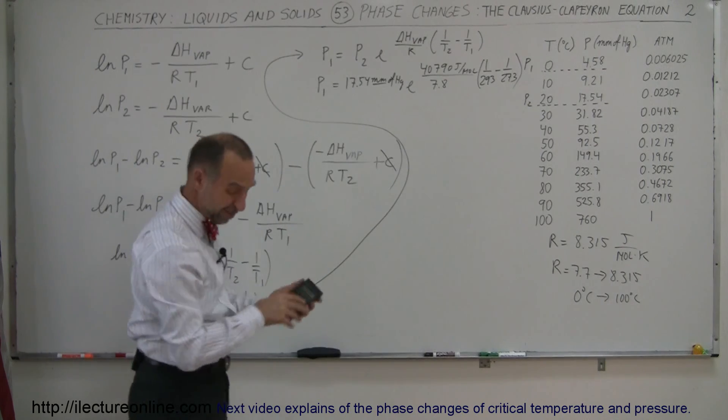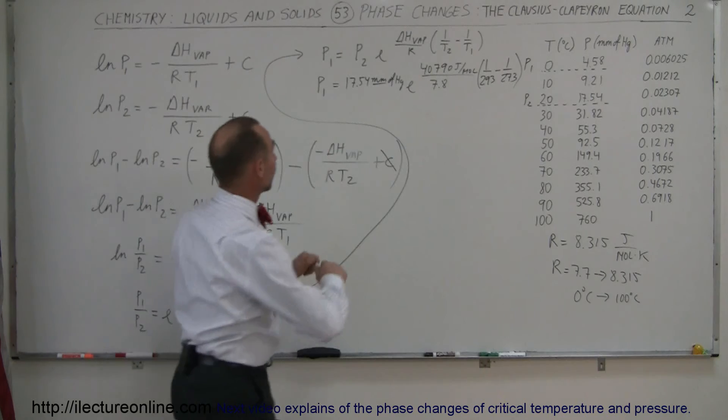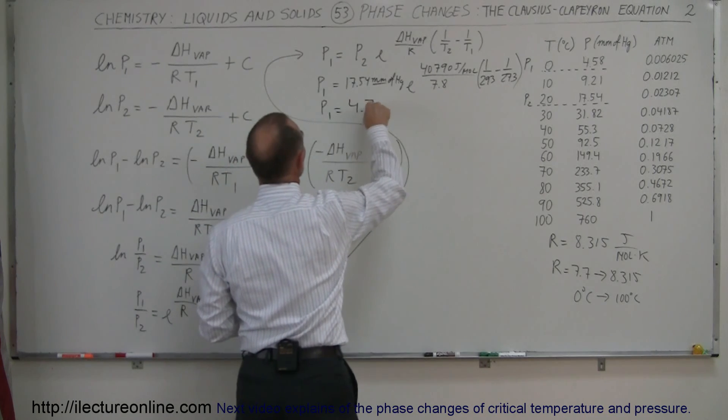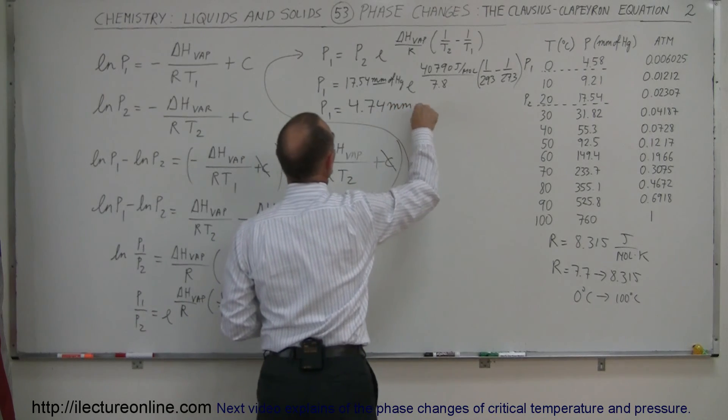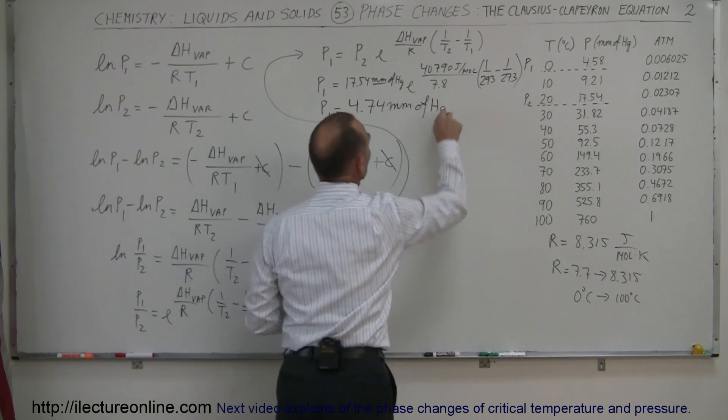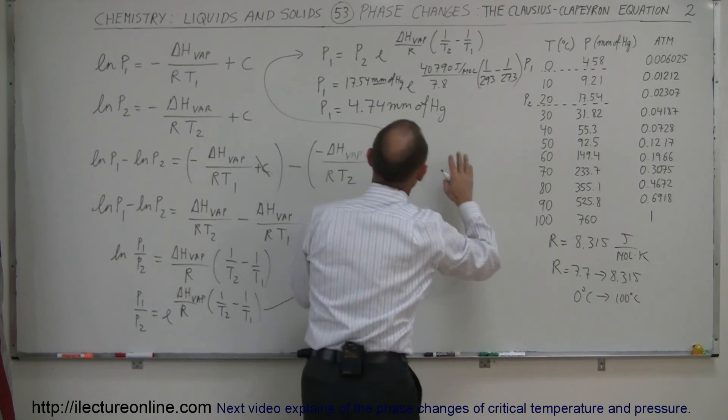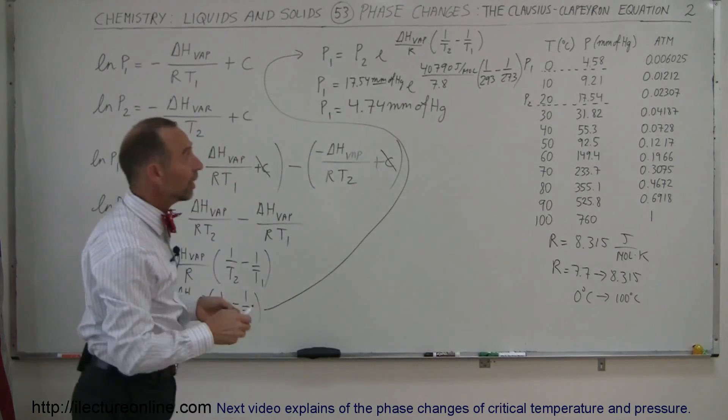I get 4.74 millimeters. So my answer, P1 equals 4.74 millimeters of mercury. Notice the real value is 4.58, I got 4.74, not quite what I wanted, but pretty close.